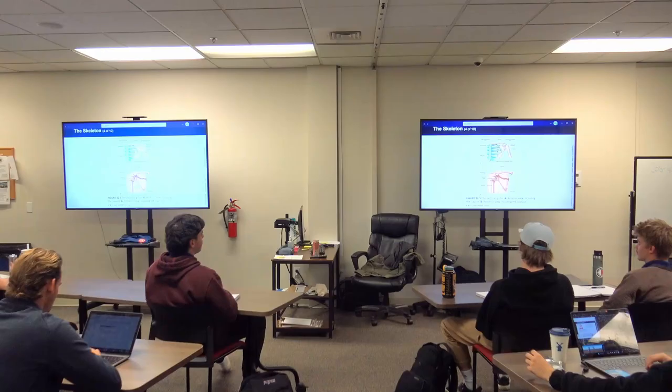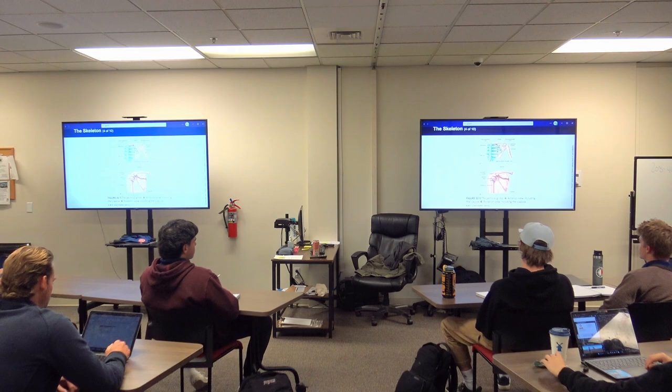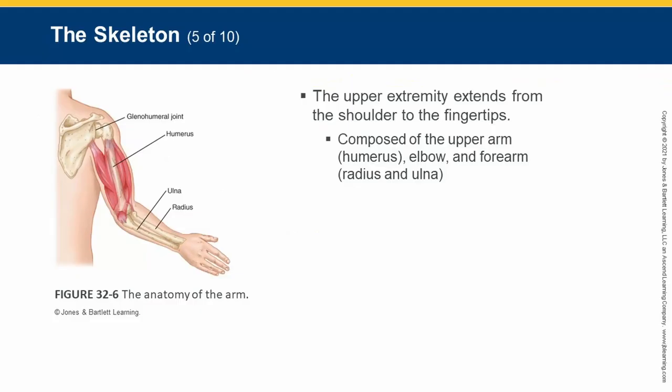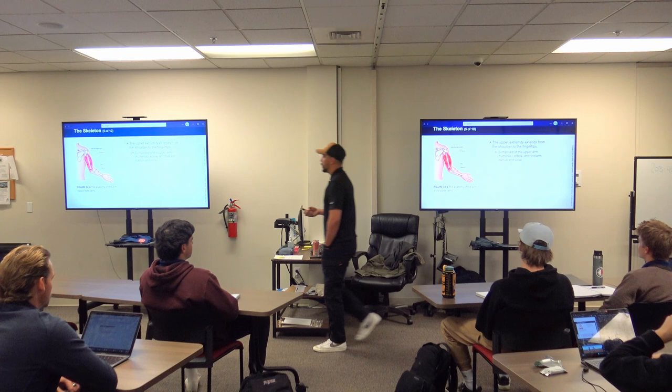The clavicle and scapula are on the back. Upper extremity goes from the shoulder to the fingertips. The upper arm bone is the humerus — the funniest bone in the body.